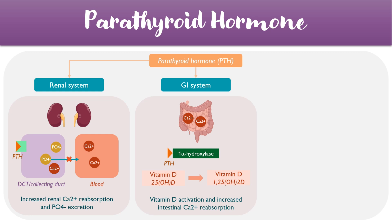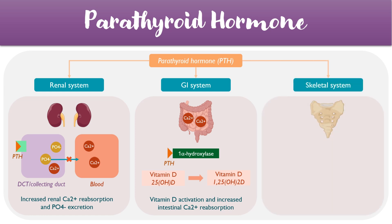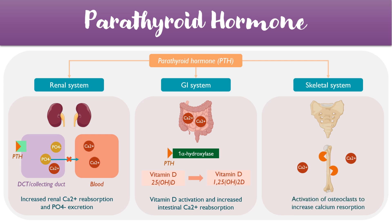The final system which parathyroid hormone acts upon is the skeletal system. Parathyroid hormone increases the activity of specific osteoclasts, which are basically these cells that lead to bone resorption. When these osteoclasts act on the bone, they help to release calcium back into the blood, thereby leading to the electrolyte changes described on the previous slide.